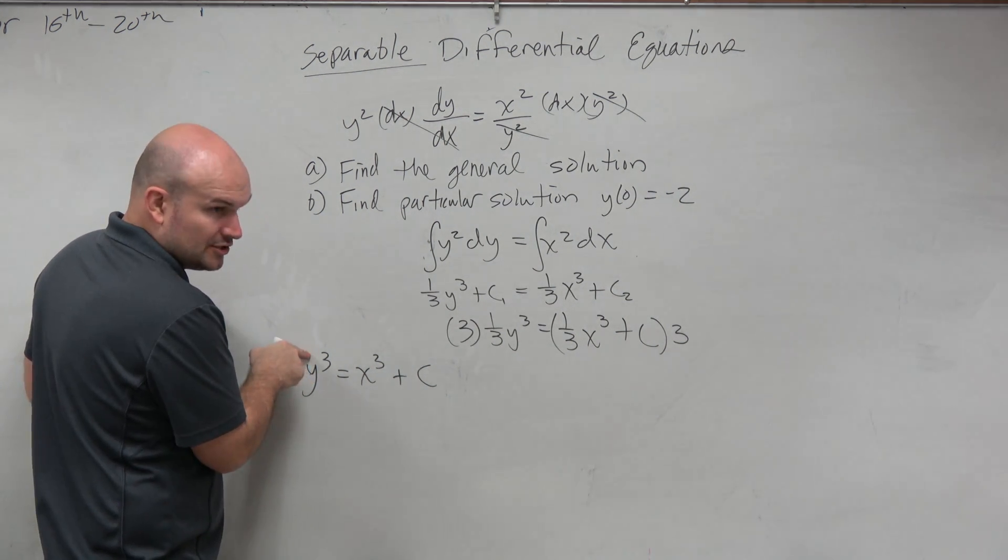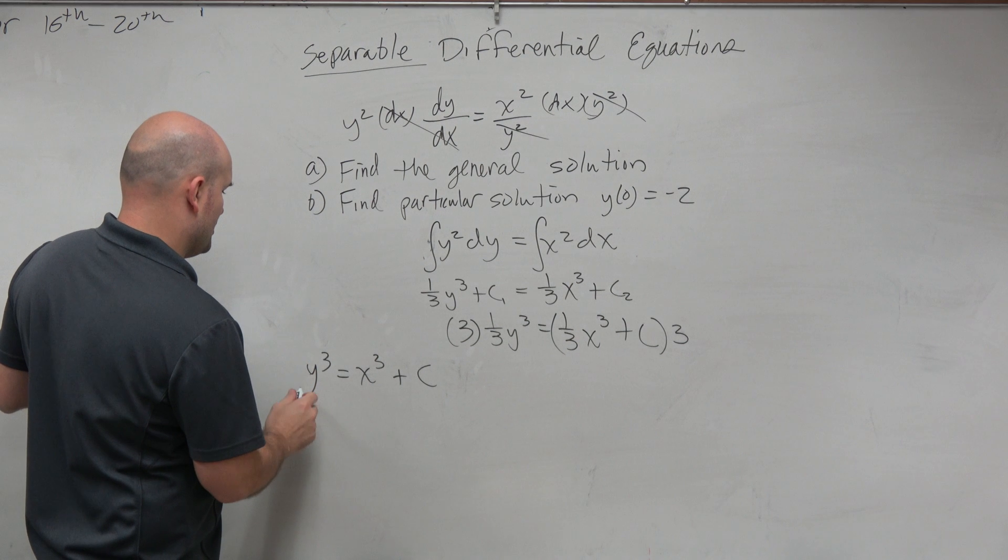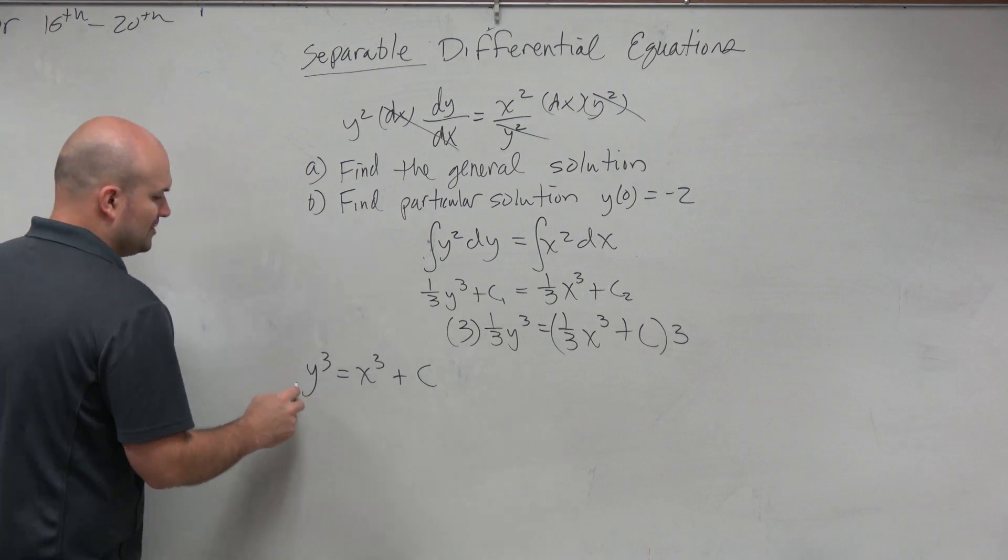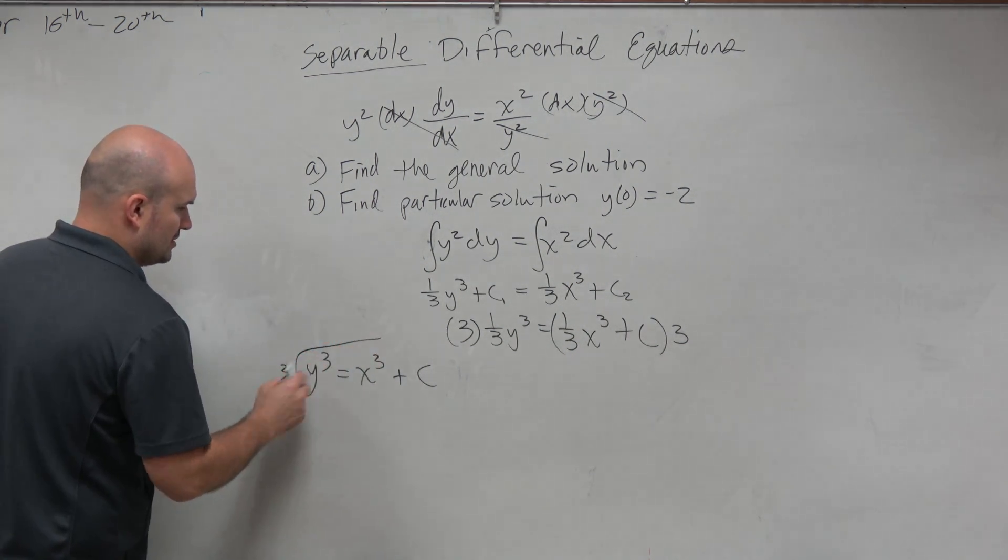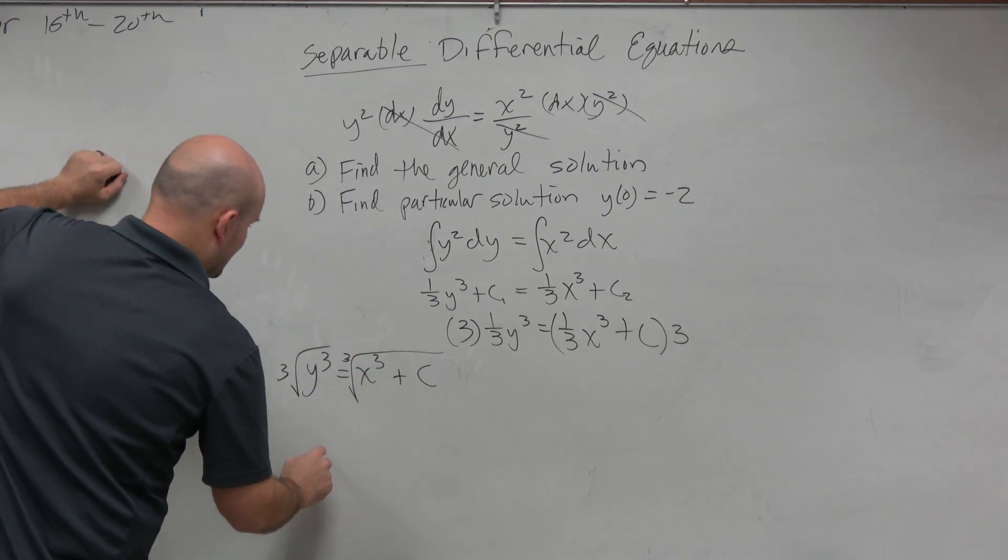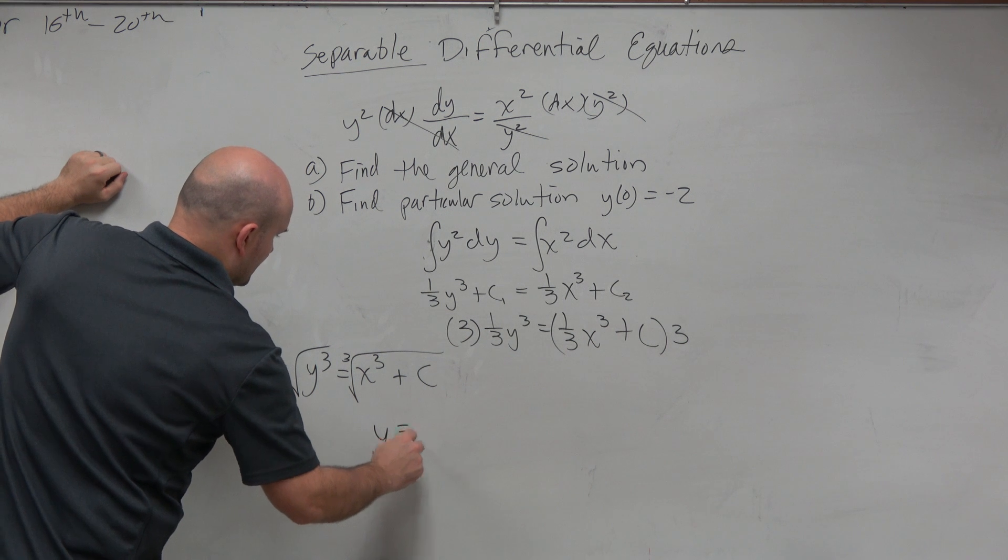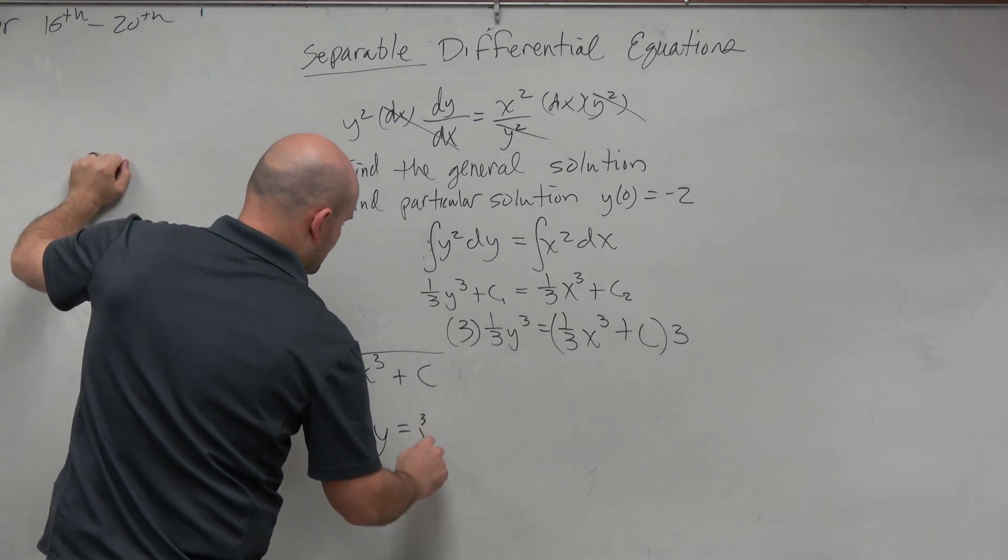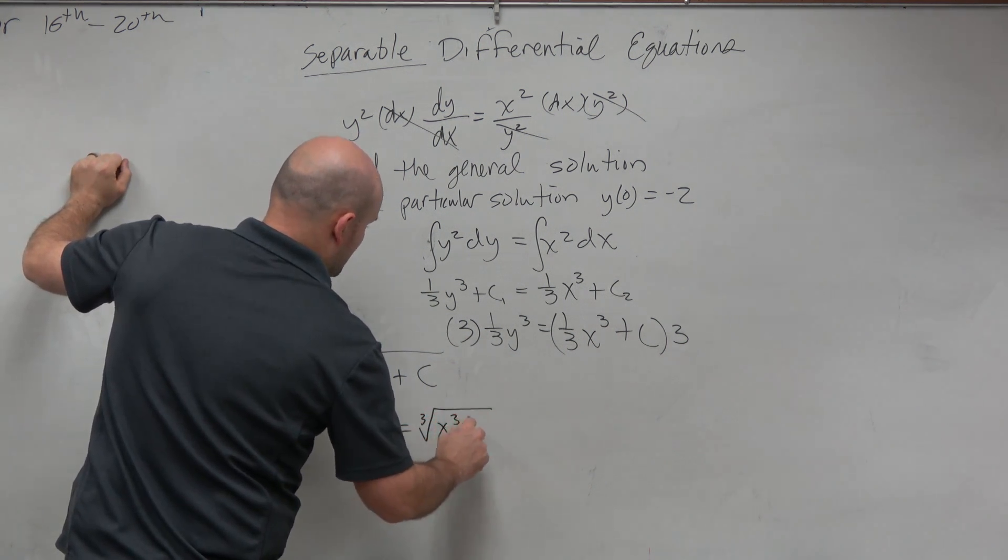Then the next step is now we need to undo this. So we need to undo the cube. So we're going to cube root both sides. And therefore, I get y is equal to the cube root of x cubed plus c.